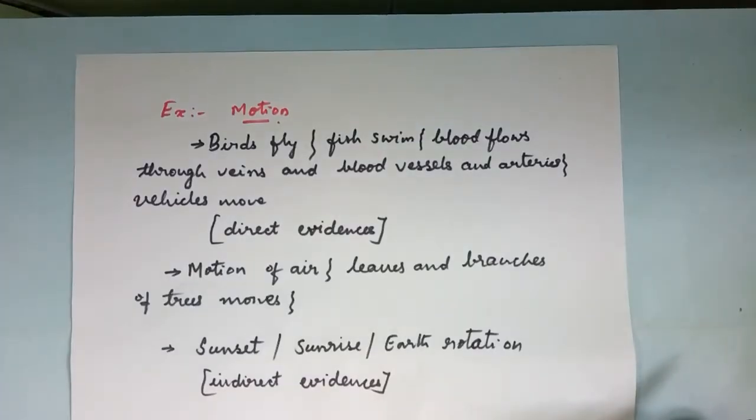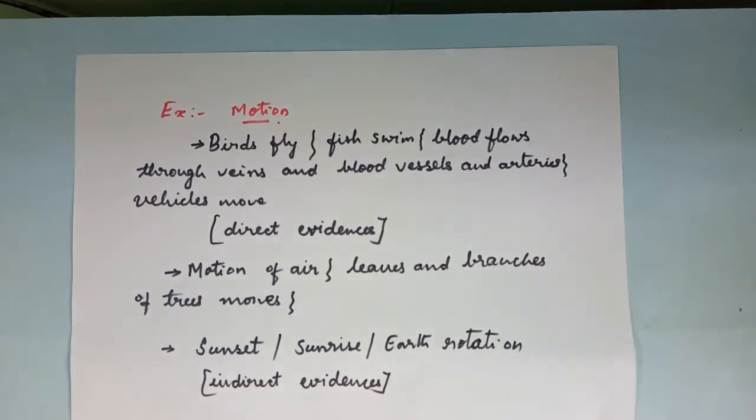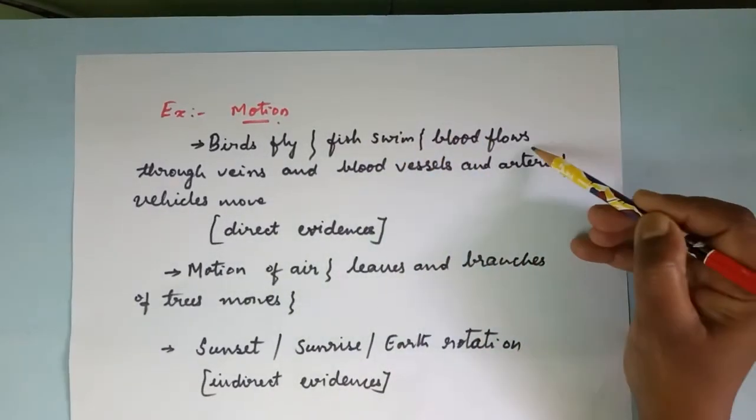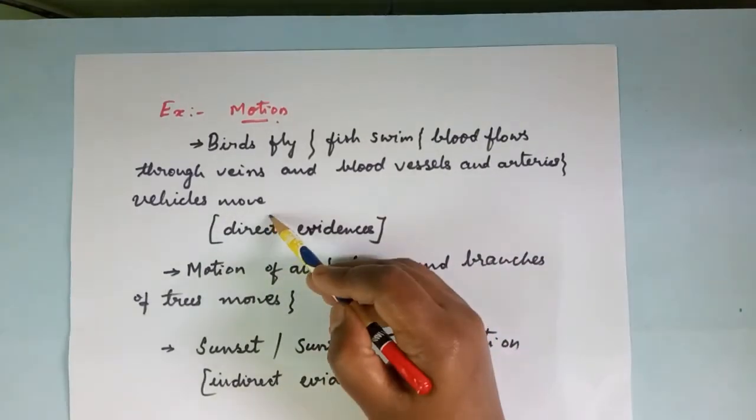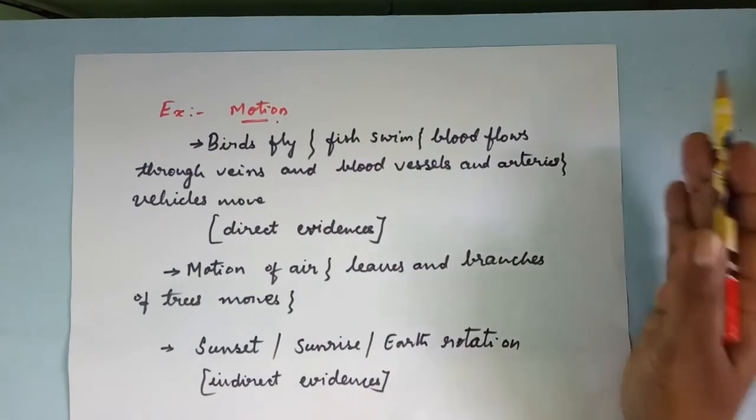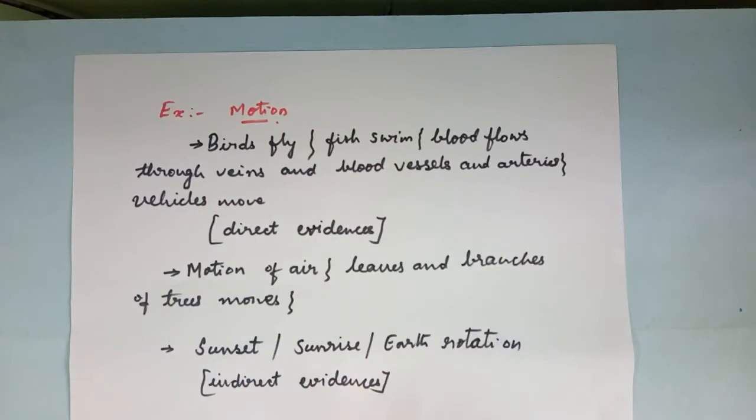Since the chapter is on motion, let us concentrate on different types of motions. There are certain types of motions we observe, we experience, we see, that means visually seen motions. I have given some examples here which we can go through. Birds flying, fish swim in the water, blood flows through the veins, blood vessels and the arteries, vehicles move. All these are the ones we practically see them. We see these movements going on.